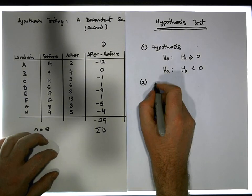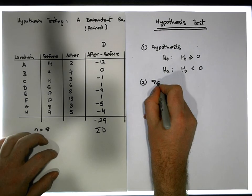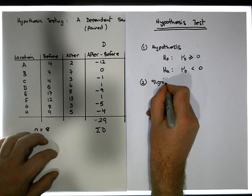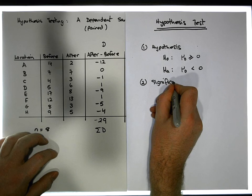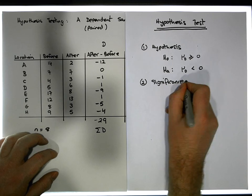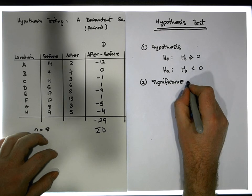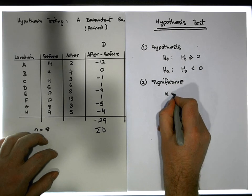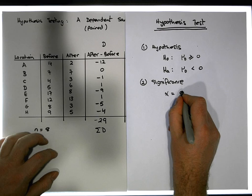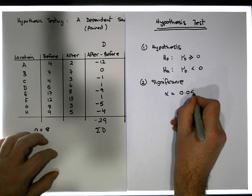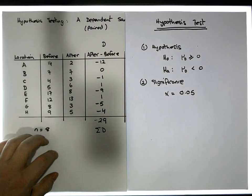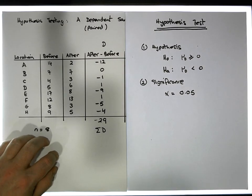Step two is to define the significance level. We're going to do this at the five percent significance level, so alpha is equal to 0.05.